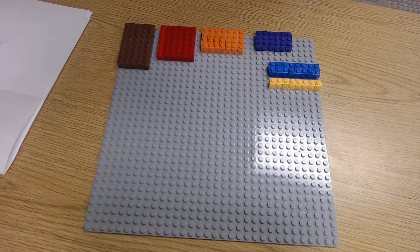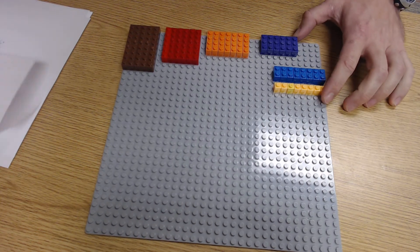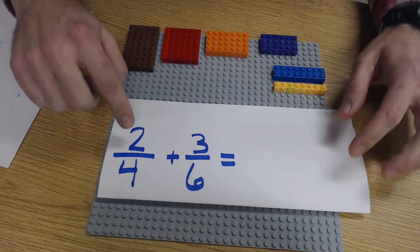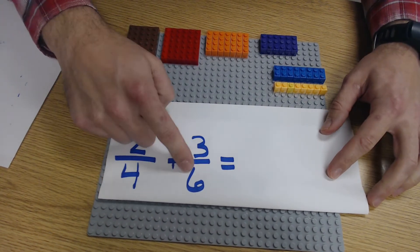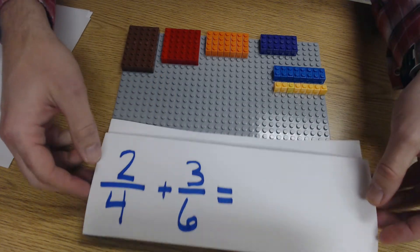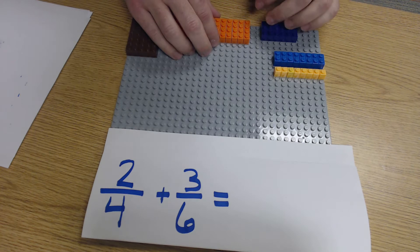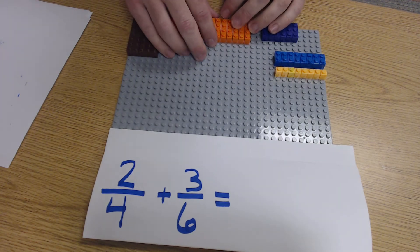Adding fractions with unlike denominators using Legos. I'm going to use this example just to start out with. We've got two-fourths plus three-sixths. And I'm going to use Legos to demo this, just to really zero in on that conceptual knowledge we want students to have moving forward.